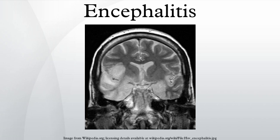Encephalitis lethargica is an atypical form of encephalitis which caused an epidemic from 1918 to 1930. Those who survived sank into a semi-conscious state that lasted for decades. Neurologist Oliver Sacks used the Parkinson's drug L-DOPA to revive those still alive in the late 1960s. There have been only a small number of isolated cases since, though in recent years a few patients have shown very similar symptoms. The cause is now thought to be either a bacterial agent or an autoimmune response following infection.